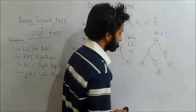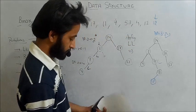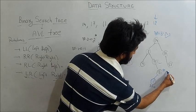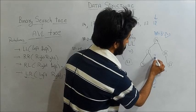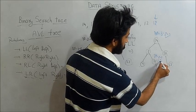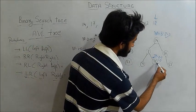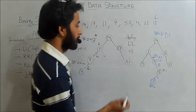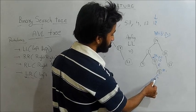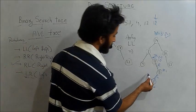When we insert element 12, it goes to the left of 13. After inserting 12, BF at node 12 is zero, BF at node 13 is one minus zero which is one, but BF at node 11 becomes one minus two which is minus two. This is the problem. The issue is due to right-left, so we apply RL rotation.